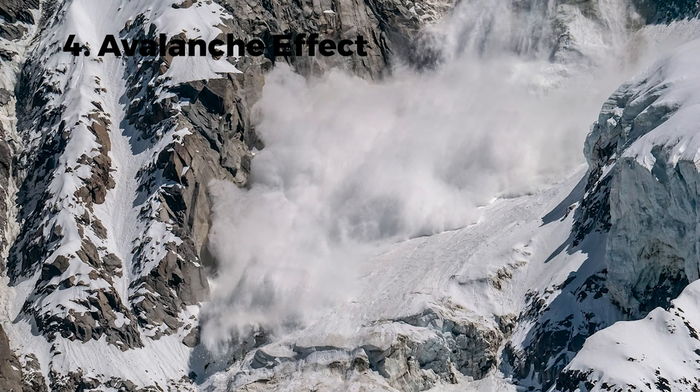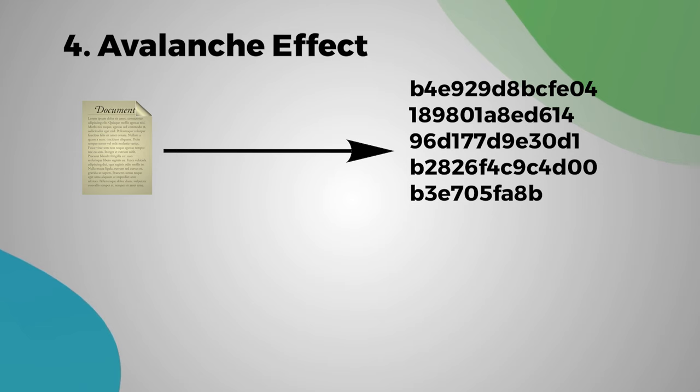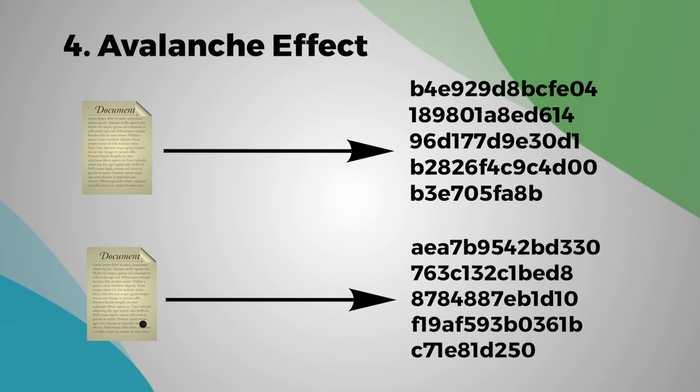The fourth requirement is the avalanche effect. It is an ultra-important requirement of the hash algorithm. So let's see what it implies. The avalanche effect means that if I take exactly the same document and I make a tiny little change—even one bit of data I change in the document, for instance we got a dot over here—if we do that tiny little change, then the hash will be absolutely different.